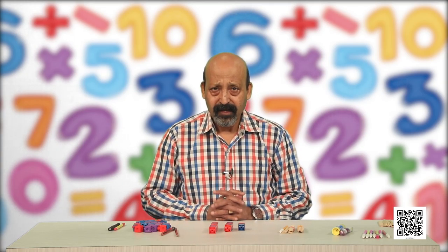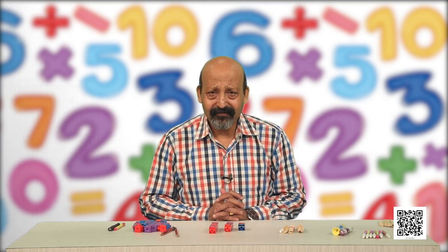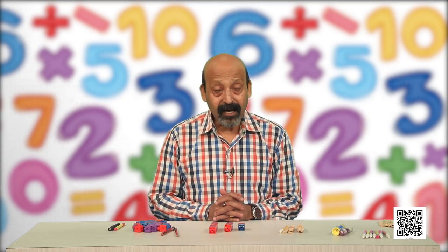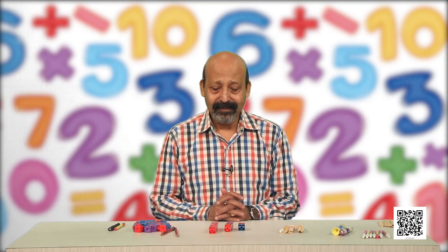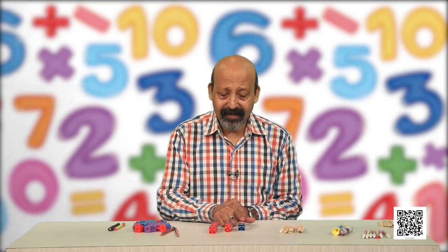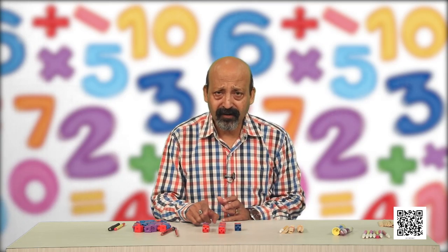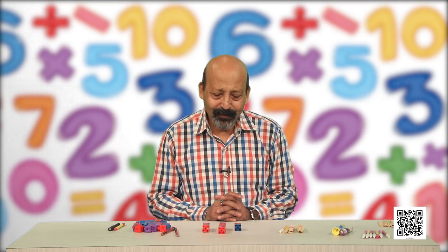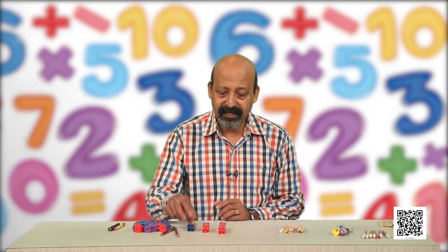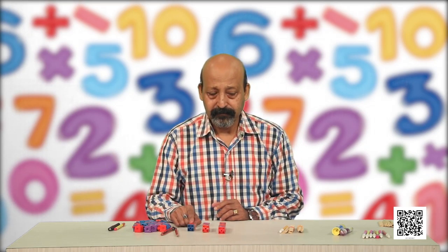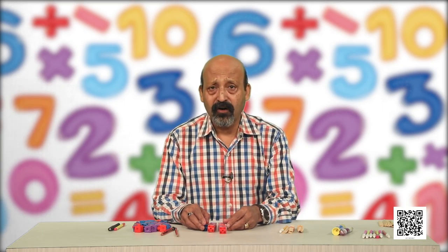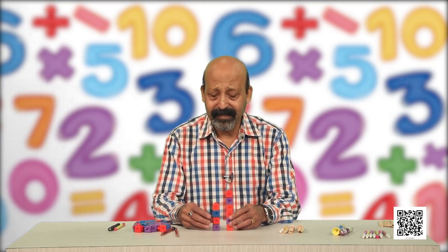Let us see some more objects. I have these three groups of blocks. Can you tell me which one is longest and which one is shortest? The middle one is longer than the shorter group and smaller than the longest. But wherever we place it, the longest will remain longest and the shortest will remain shortest — their size does not change based on placement.